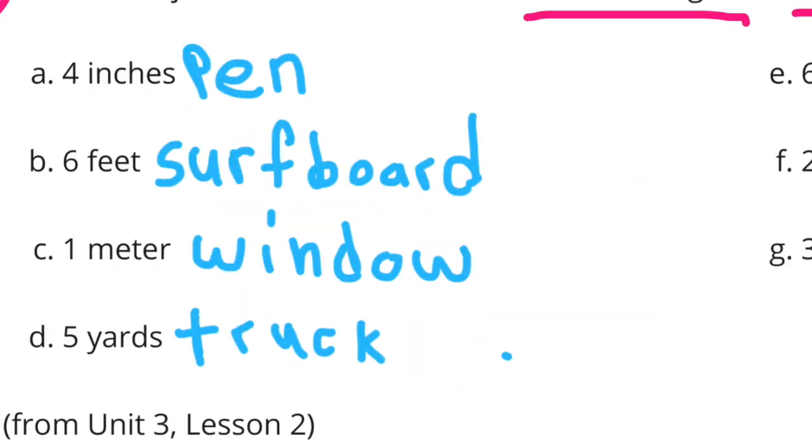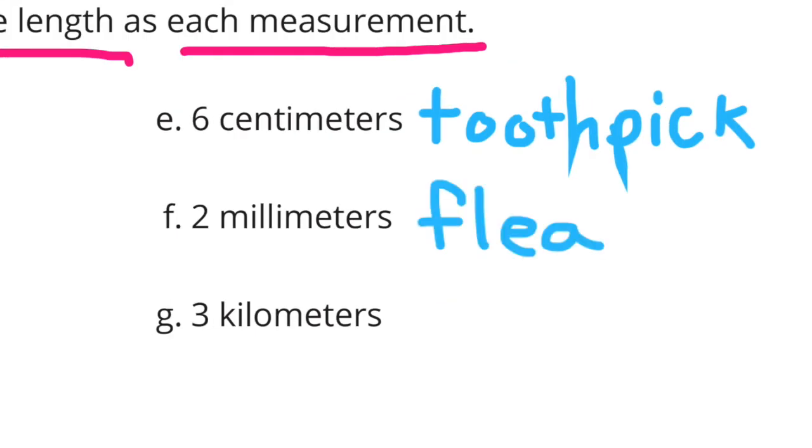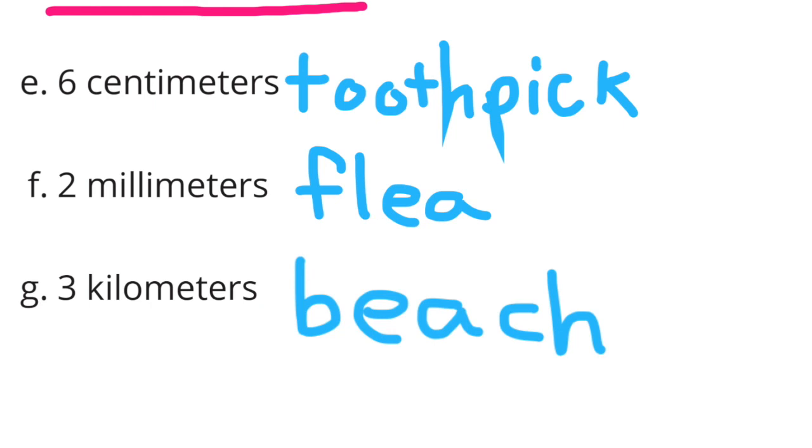D: Five yards - that's a truck. E: Six centimeters - that's a toothpick. F: Two millimeters - that's a flea. G: Three kilometers - that's a beach.